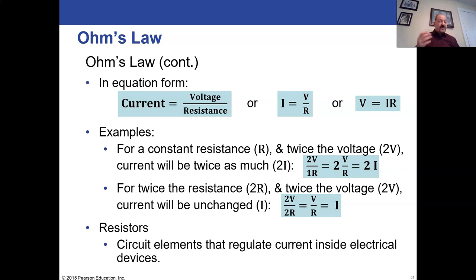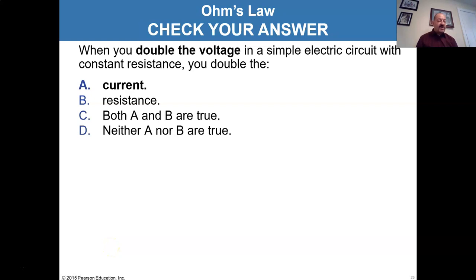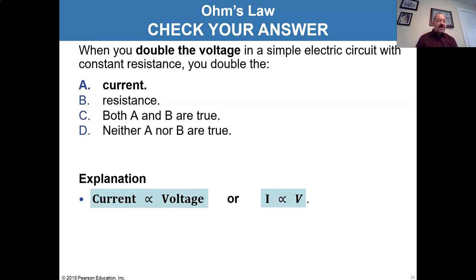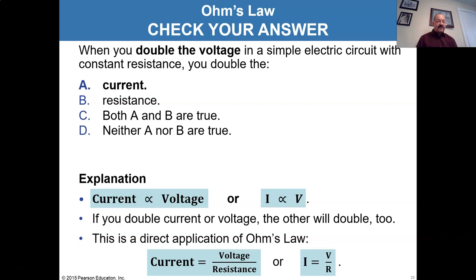Resistors are circuit elements that regulate current by converting voltage energy into heat or into energy for an appliance. For example: when you double the voltage in a simple electric circuit with constant resistance, you double the current — not the resistance. Resistance is constant, and since current is directly proportional to voltage (I = V/R), doubling V doubles I.